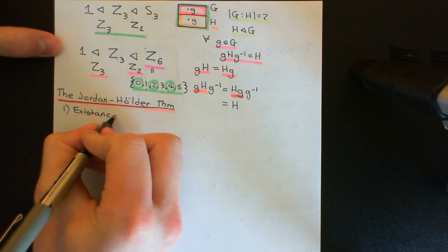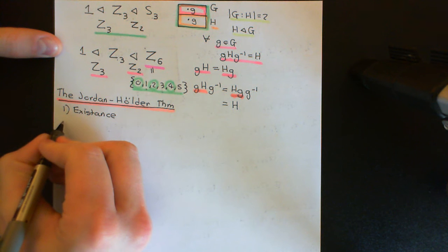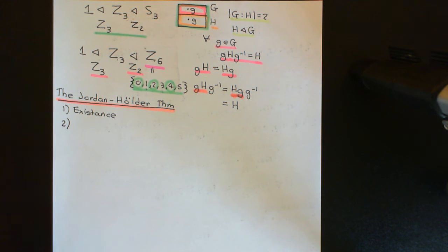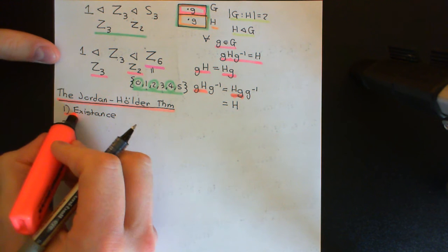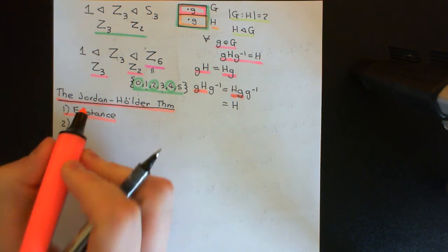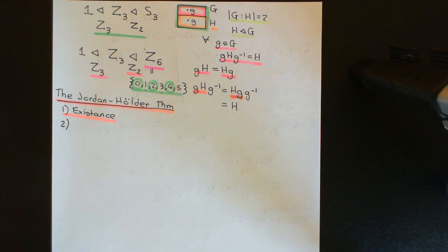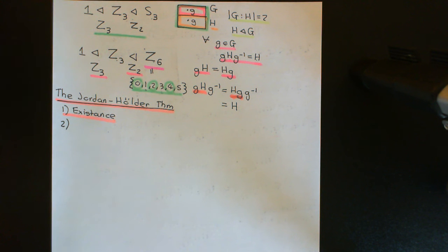We've already done part one of the Jordan-Hölder theorem, so we're now going to move on to part two. The Jordan-Hölder theorem is completely about composition series for finite groups, not for infinite groups. Part two concerns: what if you can find more than one composition series for a finite group? Can we say that there's any sort of correspondence between those two composition series?